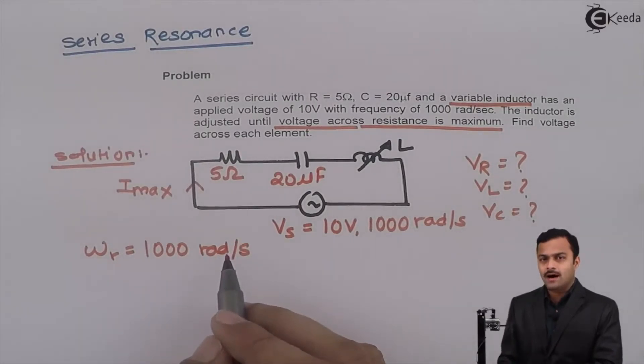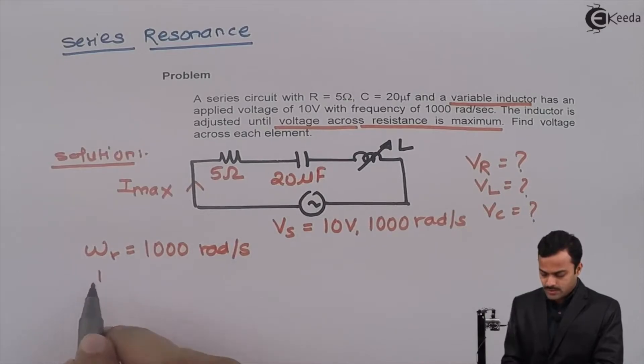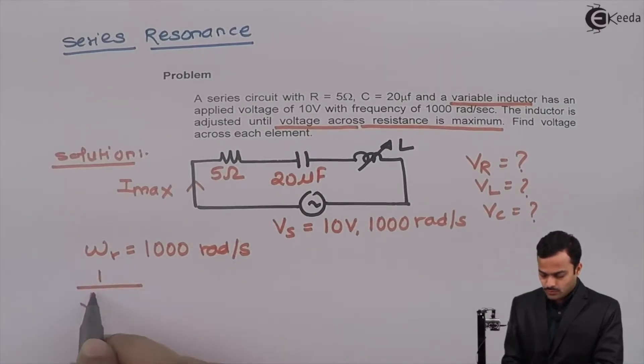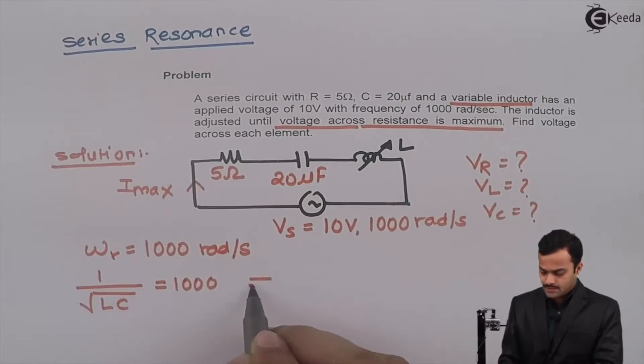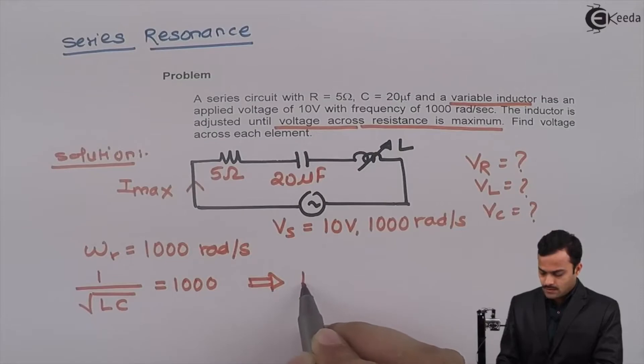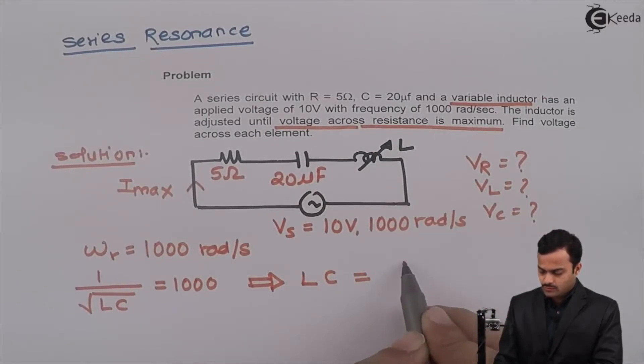Once I know omega r equal to 1000, the formula is 1 upon root LC equal to 1000. That implies LC equal to 1 upon 1000 square.